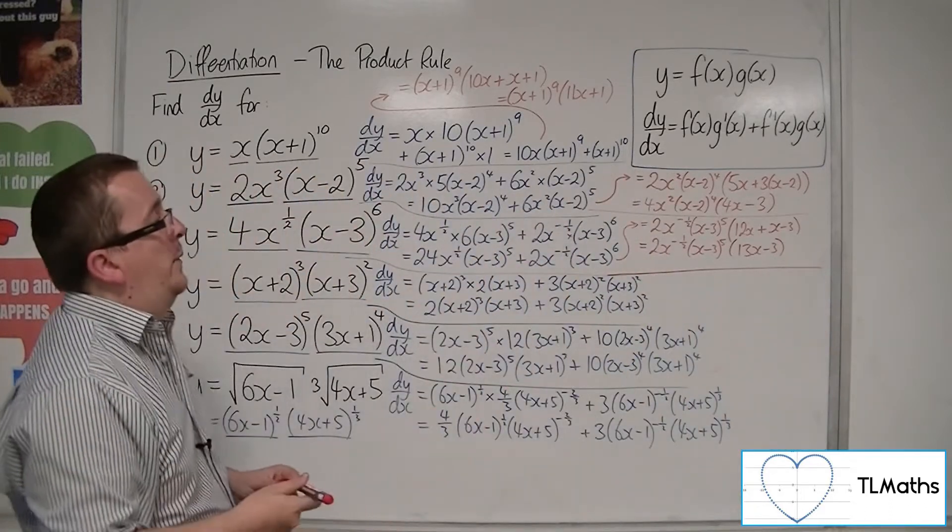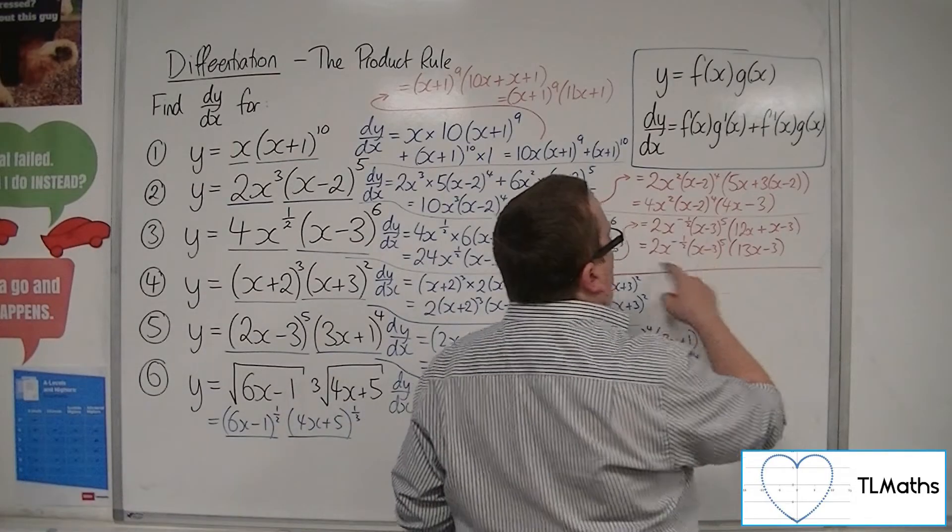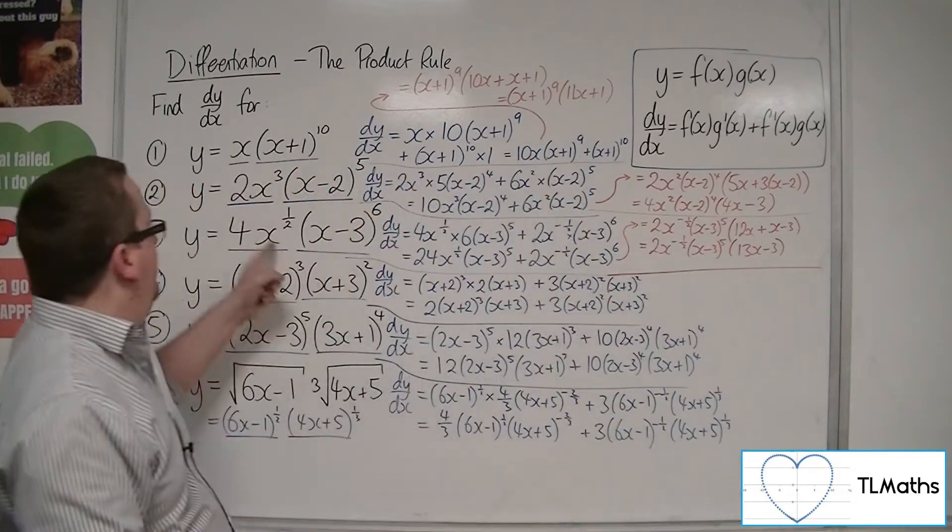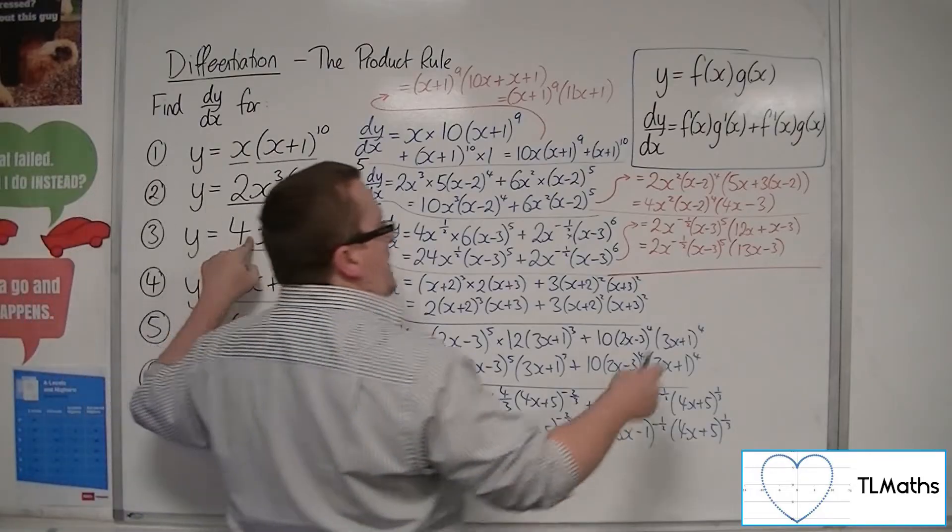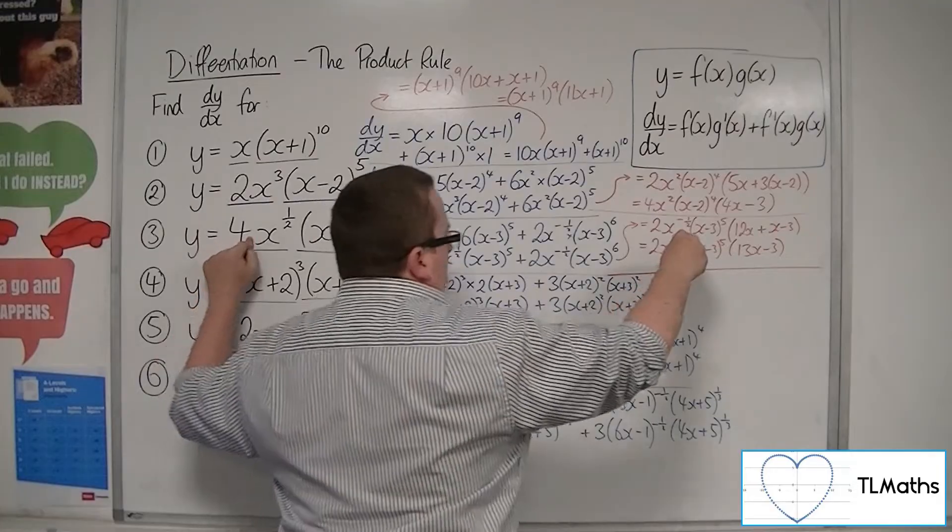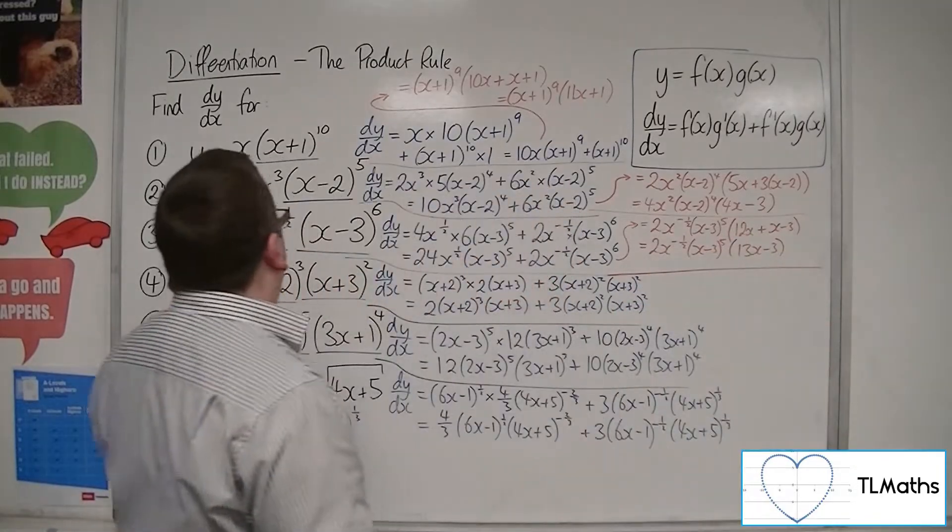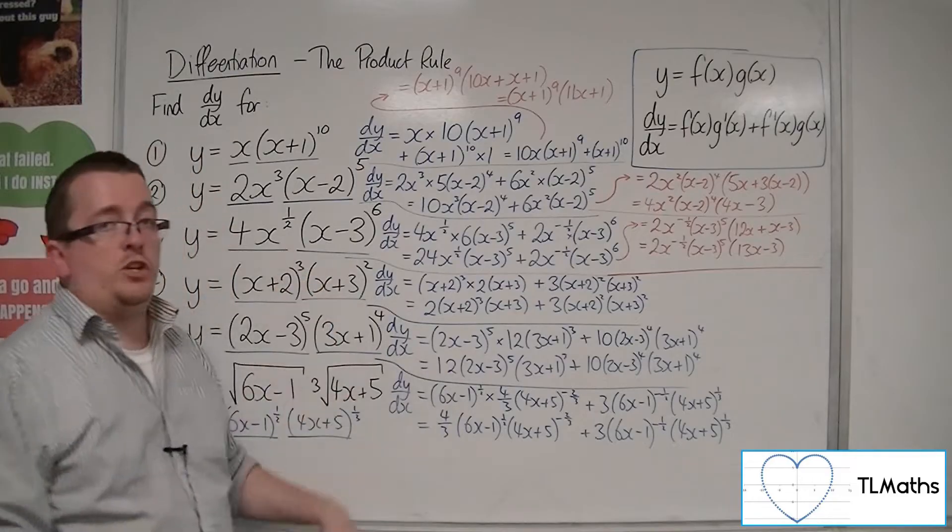So that's that one. So if I was asked where are the stationary points for this curve, now the x^(-1/2) can't be 0, so that's not counted. But we could have x is 3 and x is 3/13. So this one has 2 stationary points.